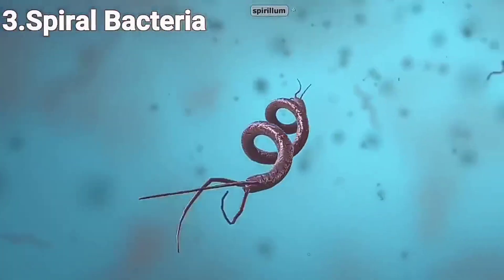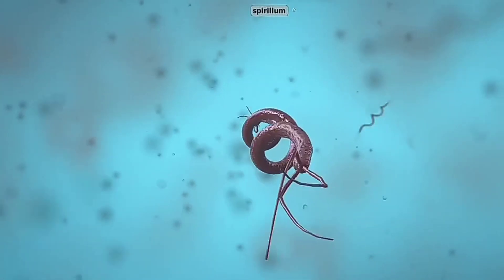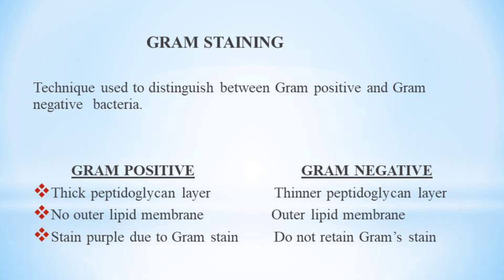The corkscrew-shaped bacterium is called Spirillum. Gram staining, also called Gram's method, is a method of staining used to distinguish and classify bacterial species into two large groups: gram-positive bacteria and gram-negative bacteria. The name comes from the Danish bacteriologist Hans Christian Gram, who developed the technique.